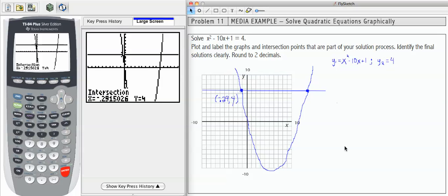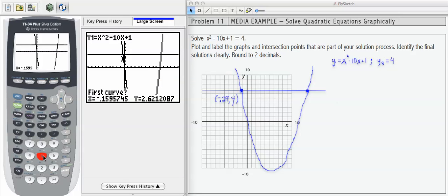Now let's find the other intersection. I'm going to go back to 2nd calc number 5 and go through that process again. But right at the first step where it says first curve,